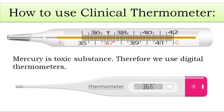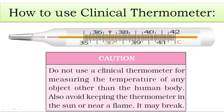This is about the clinical thermometer. These days we use digital thermometers because in old clinical thermometers mercury was used, and mercury is a toxic substance that is very difficult to dispose of. Nowadays we also use infrared digital thermometers which use digital sensors to measure temperature. As a caution: do not use the clinical thermometer for measuring the temperature of any object other than the human body.